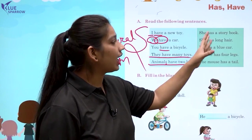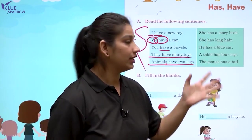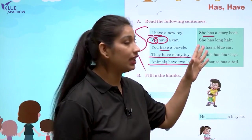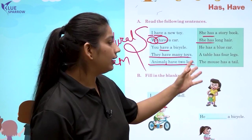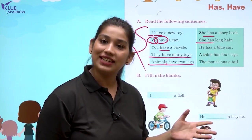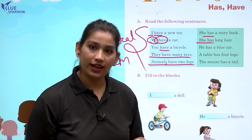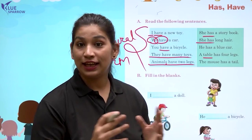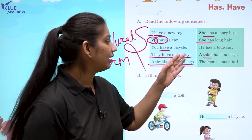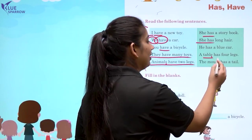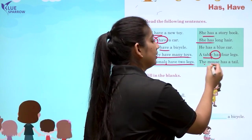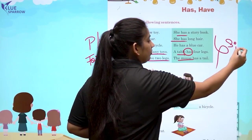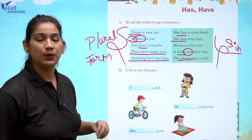She has a story book — unke paas ek story book hai. She ke saath hum has lagate hai. She has long hair — uske baal lambe hai, she ke saath again hum has ka use karenge. He has a blue car — uske paas blue car hai, he ke saath bhi hum has ka use karte hai. A table has four legs — ek table ki four legs hoti hai. Table hai, tables nahi hai — agar tables hota to hum have ka use karte, table hai isliye has ka use karenge. The mouse has a tail — mouse is one in number, so we use has here. All of these things are singular — they are one, that's why we use has.